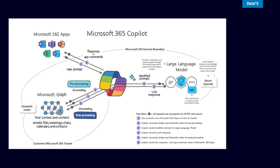Once it has an idea of what data you're looking for and, more importantly, what data you have access to, it sends your prompt and the data over to the large language model for processing. The large language model looks at what you're saying, tries to understand exactly what you're asking, and then using that information and your company data, it comes up with a response and sends this response back to Graph. This second grounding is to make sure that the response contains information you are supposed to have access to and pulls in all the data it thinks you might be talking about. Once it's finished this second grounding, it sends it back to Copilot, which then sends it back to the application in the form of a response.